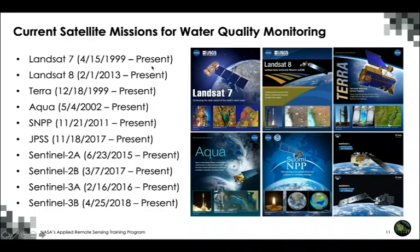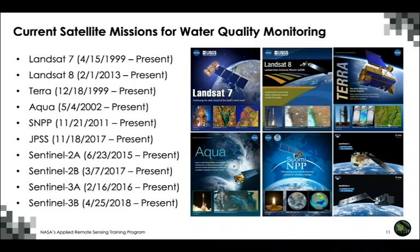Looking at temporal coverage: Terra and Aqua combined have observations available since 1999, so MODIS provides a long time series. As Terra, Aqua, and MODIS approach the end of their missions, VIIRS on SNPP and JPSS will take over and continue the time series. VIIRS has very similar spectral, spatial, and temporal characteristics to MODIS, which is why we focus on both sensors — a long time series can be constructed from historical and current MODIS data and VIIRS data continuing into the future.